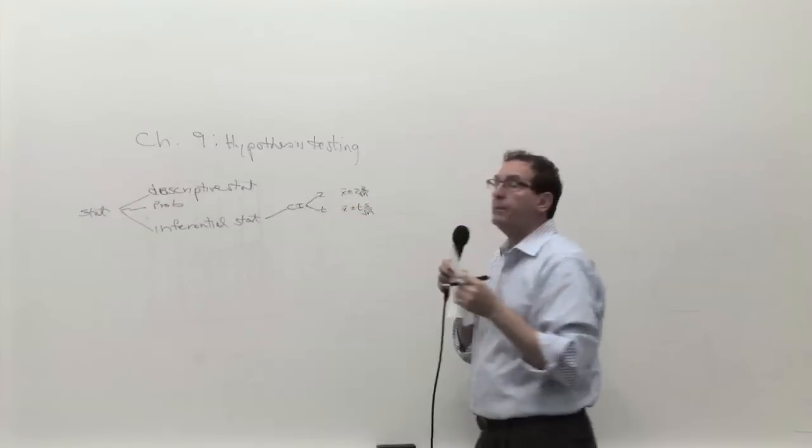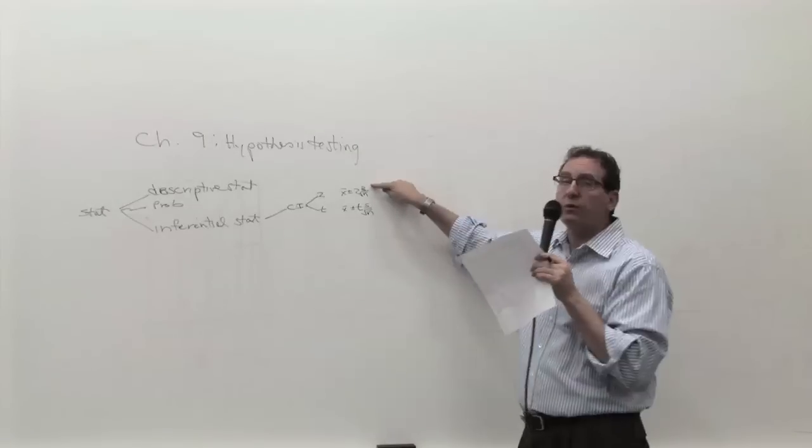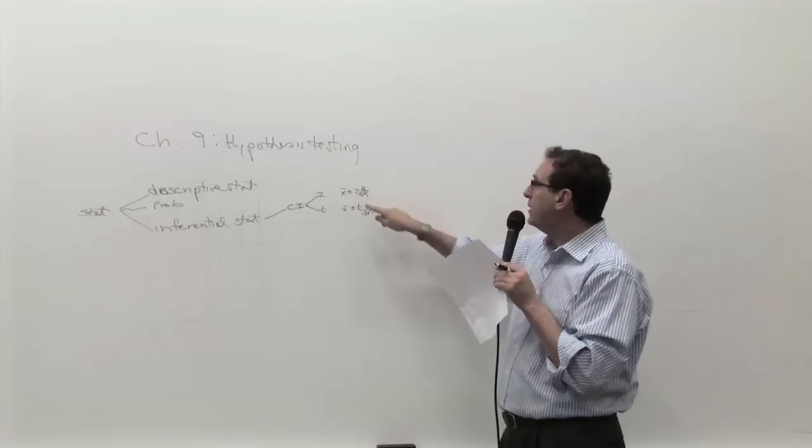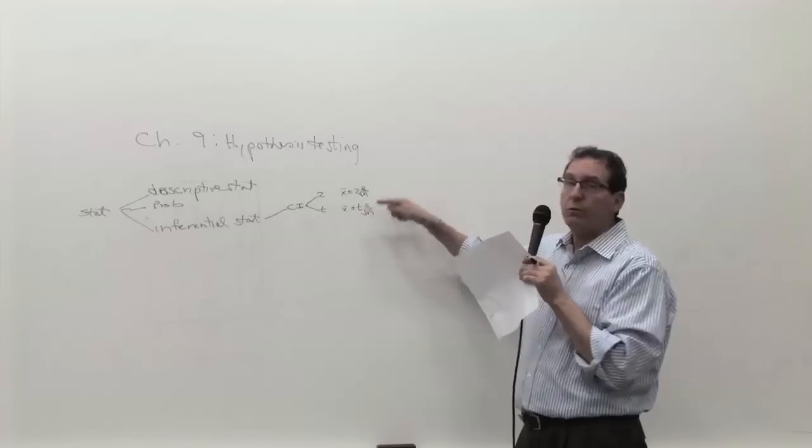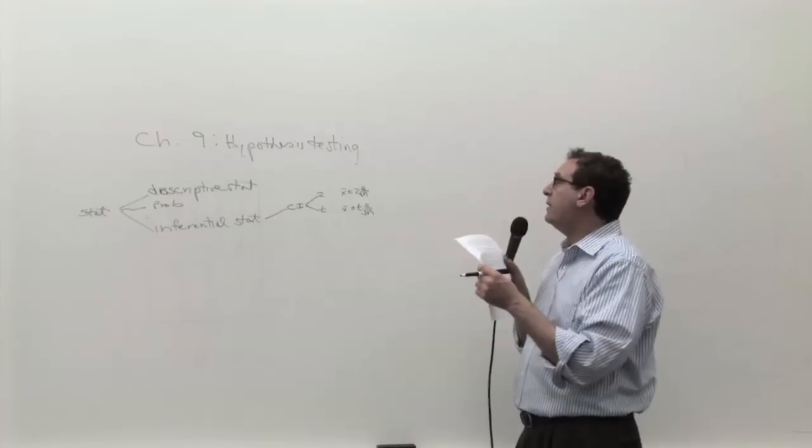And that, by the way, reminds you of the basic distinction between them. When you know the population standard deviation, which is hardly ever happening in real life, you go to the Z version. But when you know the sample standard deviation, which we just started talking about last time in chapter nine, then you go to the T version.